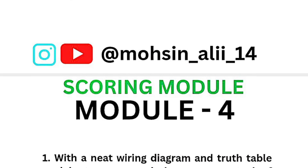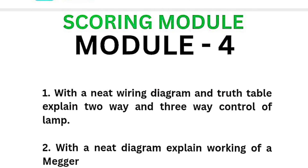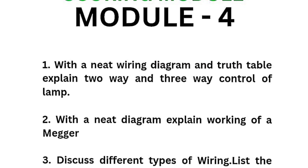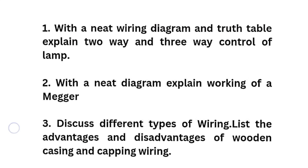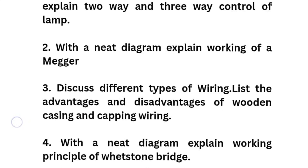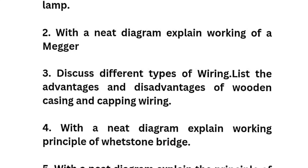Coming to another scoring module, Module 4. You need to go through these questions: with a neat wiring diagram and truth table explain two-way and three-way control of a lamp — this is a super important question frequently asked, and also most important for your lab exams. With a neat diagram explain working of Ammeter and discuss different types of wiring. List the advantages and disadvantages of wooden casing and capping wiring.